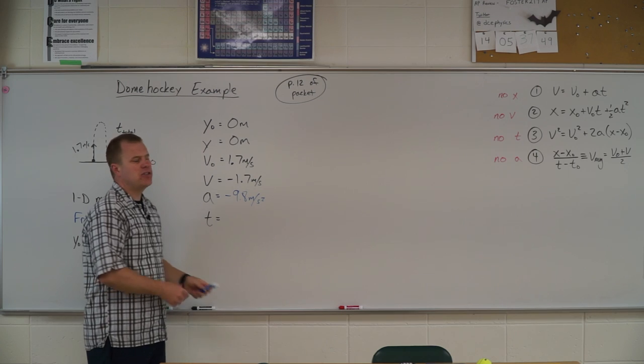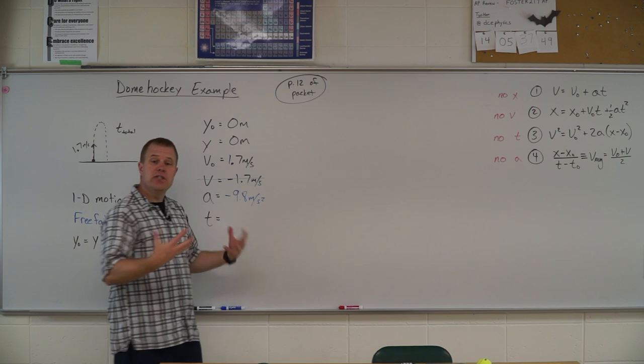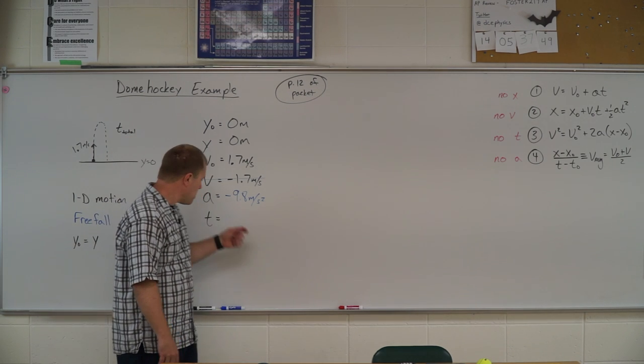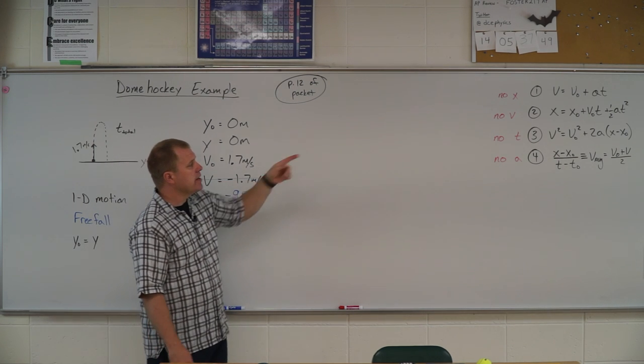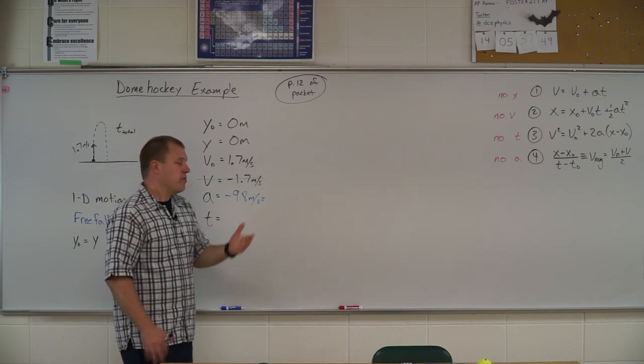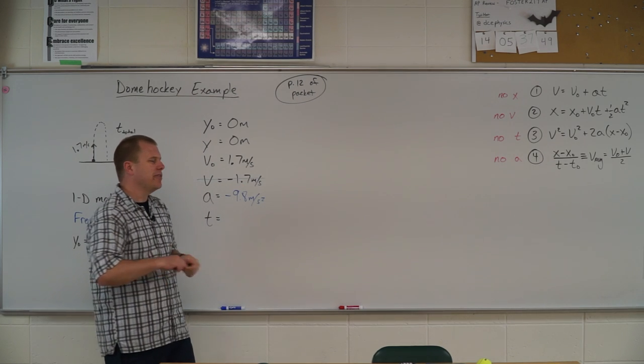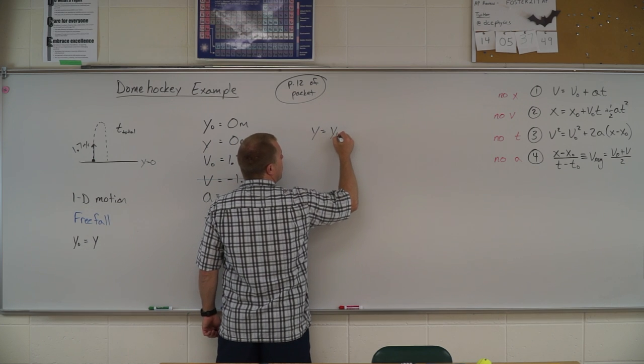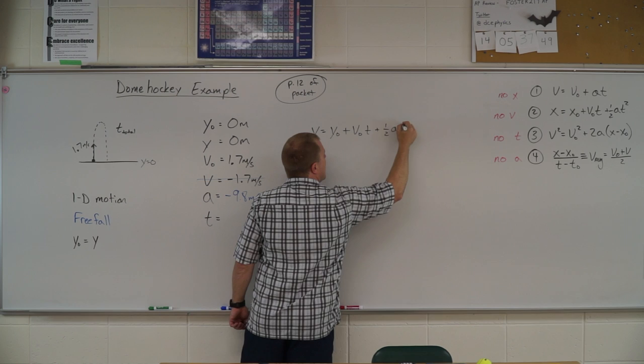Now we're just going to assume we didn't know that. But if you did know that, it might make the problem a little easier to solve for. So we're solving for time. We don't know v final, so we pick an equation without v final. That would be equation number two. The reason I don't want to use the tricky tiger trail is I want to give you some experience with number two when we're solving for time. So I pick it up, I get y equals y-naught plus v-naught t plus one half a t squared.